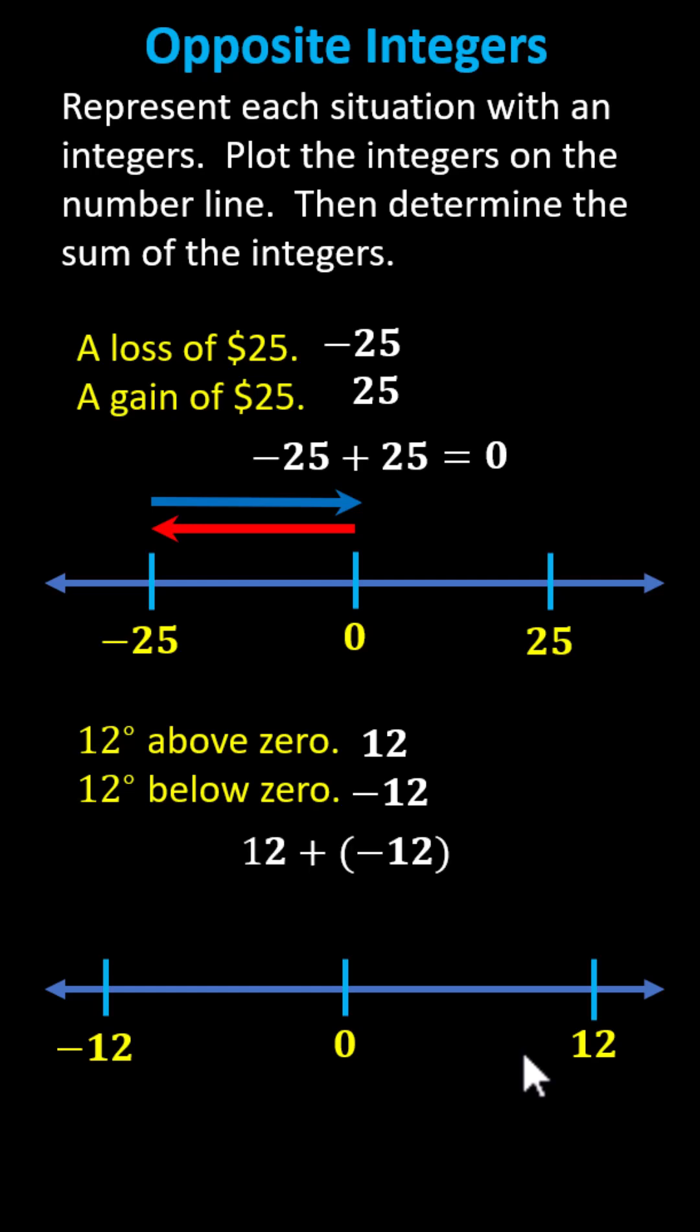And now let's model the sum. The sum is 12 plus negative 12. For positive 12, from zero, we move right 12 units. And then because we're adding negative 12 from positive 12, we move left 12 units, which again brings us back to zero.